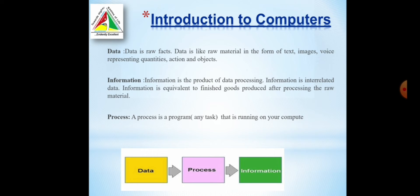What is data? Data is a fact. Like any other work, we need a raw material. In case of computer, we need some raw material. That raw information is called data. Data is a raw fact, like raw material. It is in the form of text, images, objects, anything representing quantities.